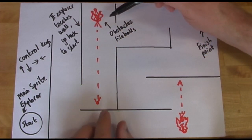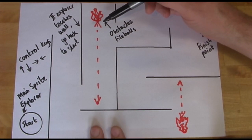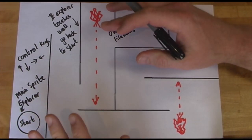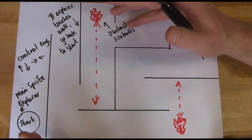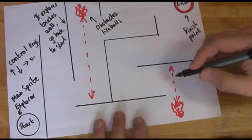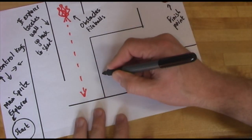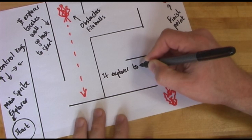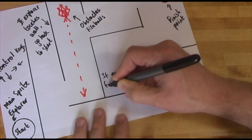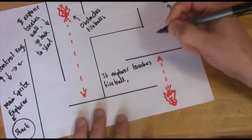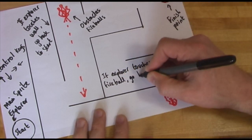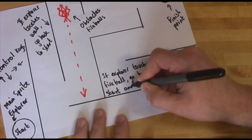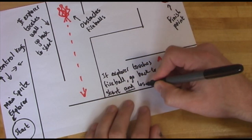We've got fireballs — so what happens if the explorer touches a fireball? He'll obviously have to go back to the start, but could we add lives? He could lose a life — that would be exciting. So I'll add a rule: if the explorer touches a fireball, go back to start and lose a life.